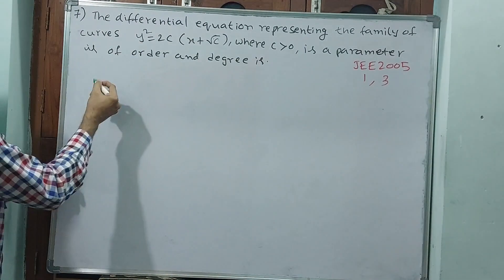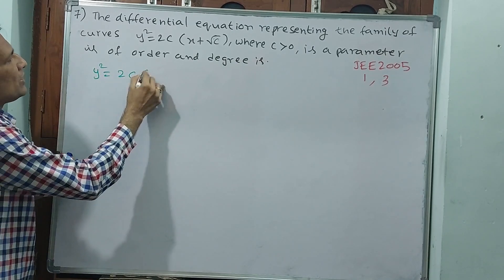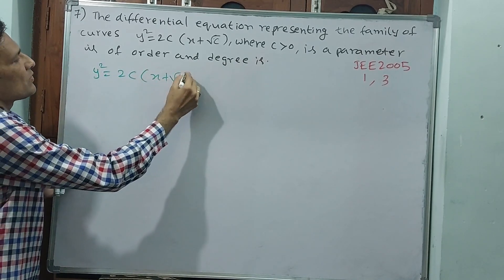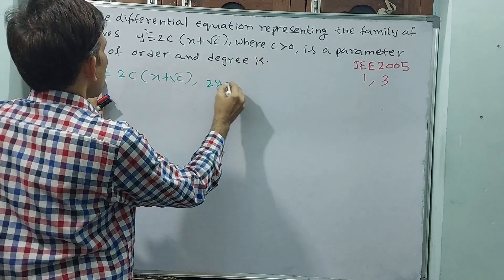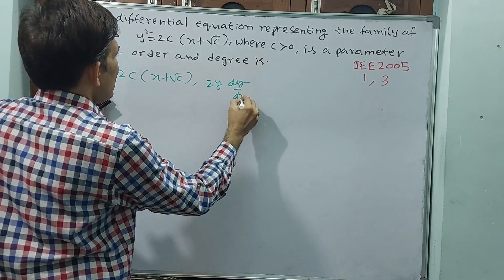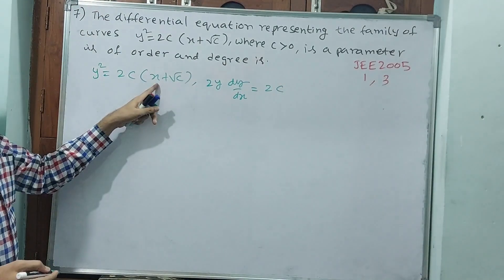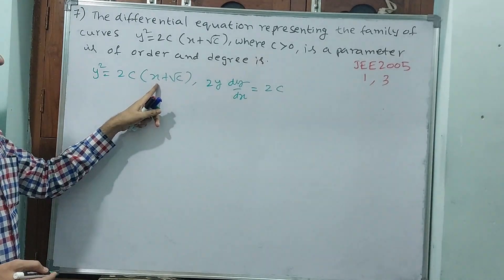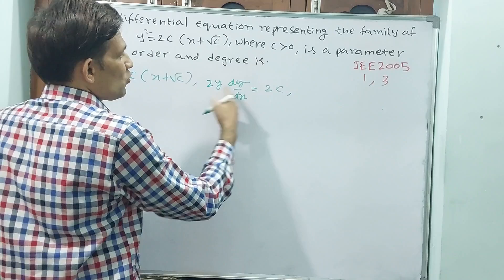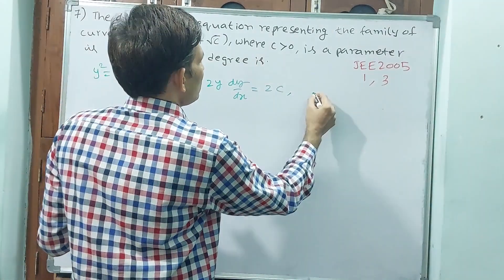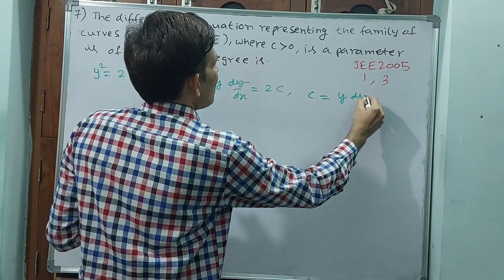First I am taking this equation. y² = 2cx + √c. Now differentiate: 2y·dy/dx = 2c. That's all. The derivative of x is 1, and this is 0. Now 2, 2 you can cancel out. If c cancels, c = y·dy/dx.